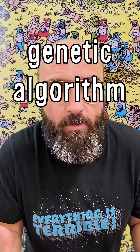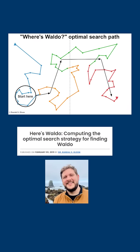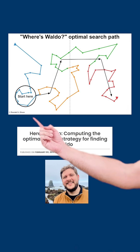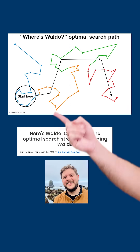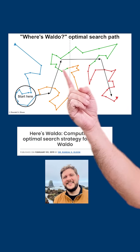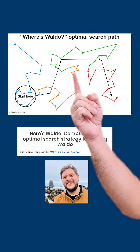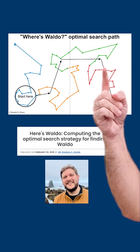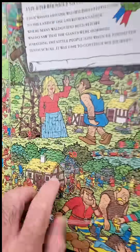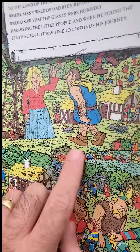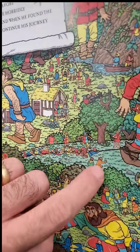So instead he used a genetic algorithm to find a nearly perfect solution — this. You start on the left at the top of the bottom third, scan across for a bit and then jump up to the bottom of the top third. Move about halfway into the right page and then dive down. If Waldo isn't there, check the very middle or the edges.